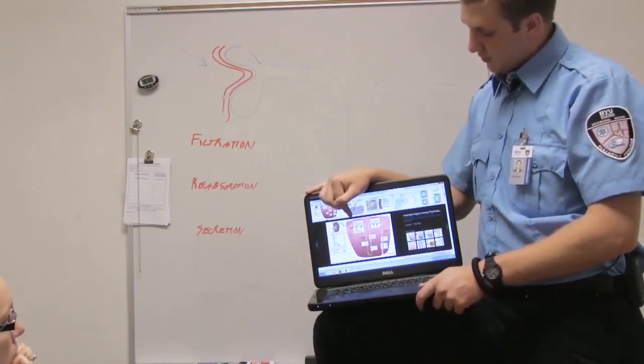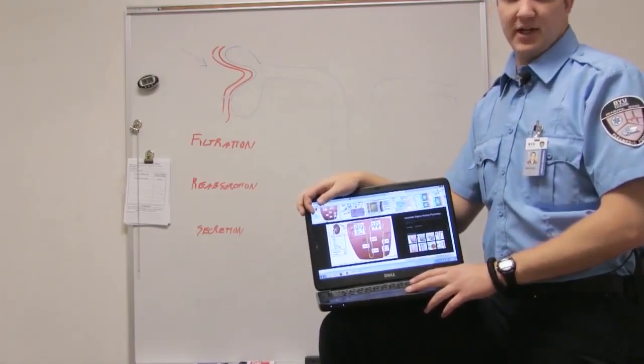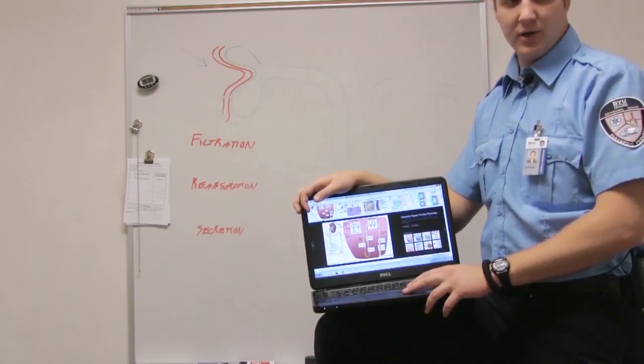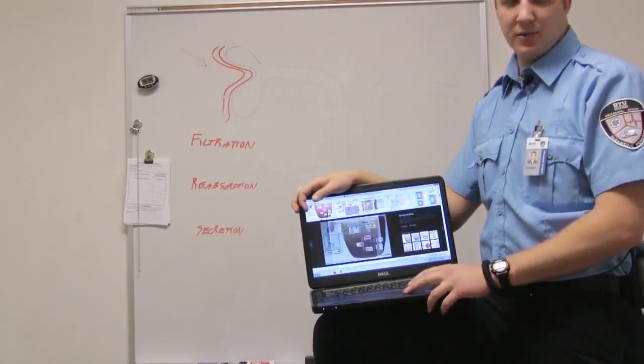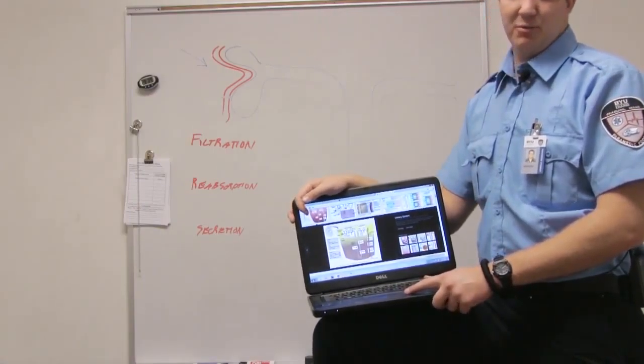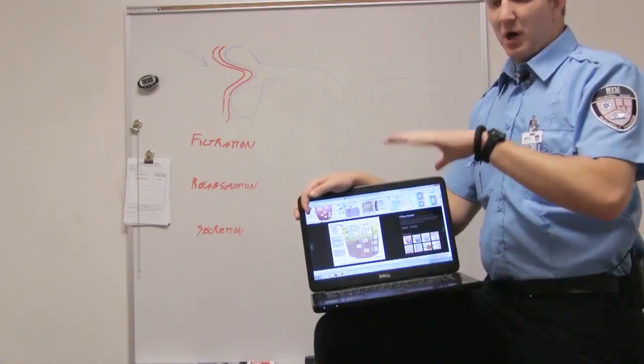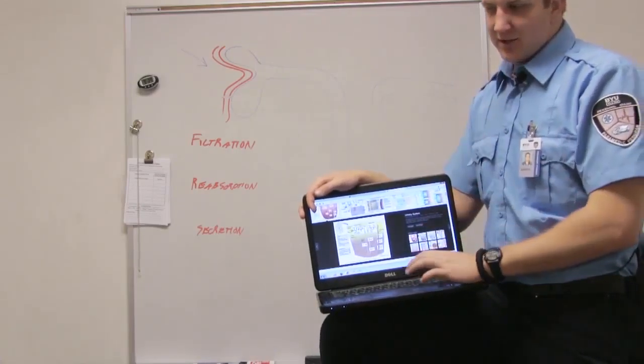So in the proximal tubule, the idea here is we want to filter out these solutes, the things like glucose and whatnot that are helpful. We don't want to urinate them out, we want to retain them. But also we want to keep sodium balanced, we want to keep pH balanced, we want to keep our osmotic balance at the same time.